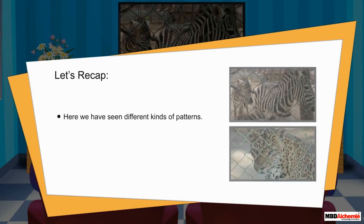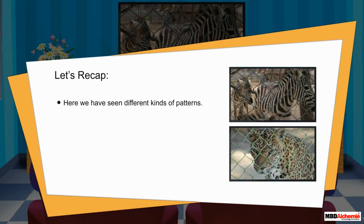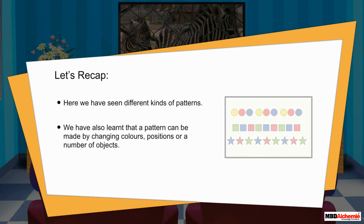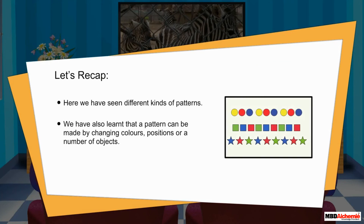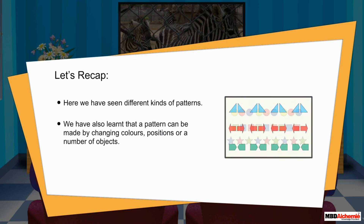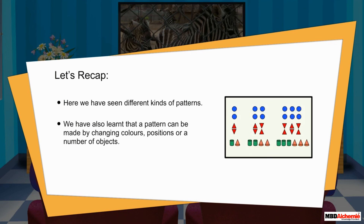Let's recap. Here we have seen different kinds of patterns. We have also learned that a pattern can be made by changing colors, positions, or the number of objects.